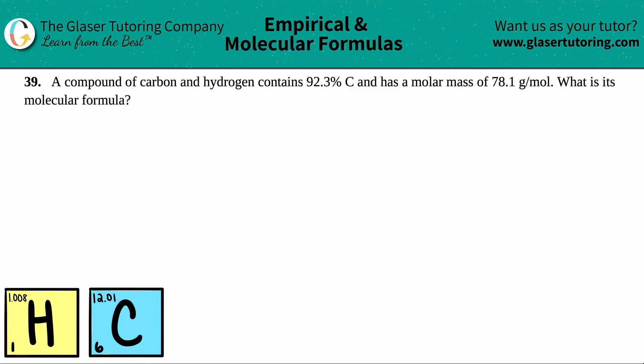Number 39. A compound of carbon and hydrogen contains 92.3% carbon and has a molar mass of 78.1 grams per mole. What is its molecular formula?